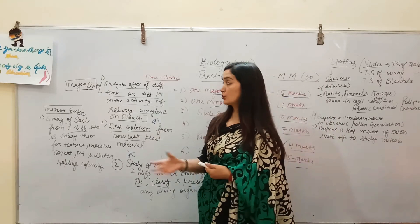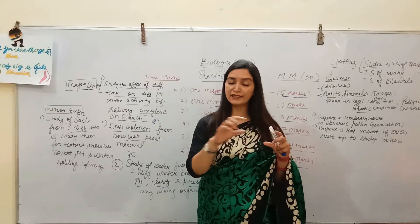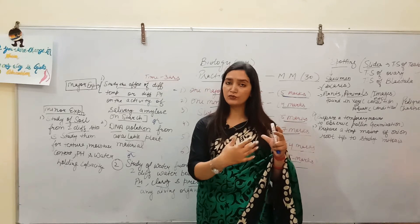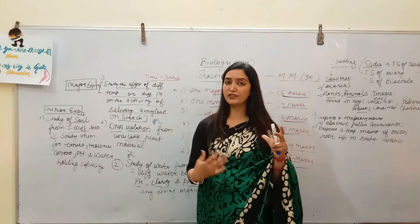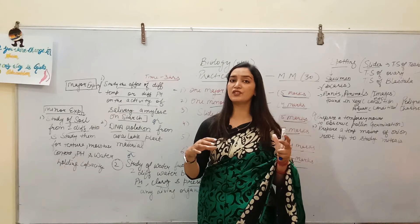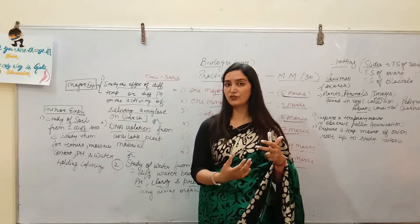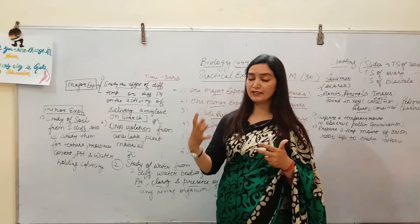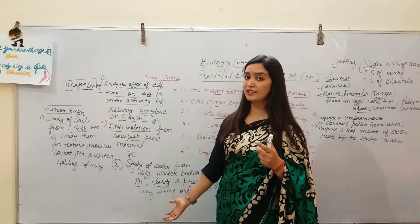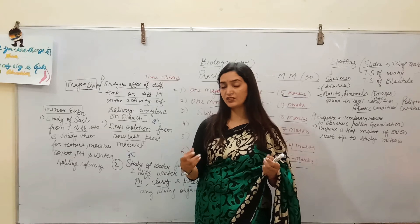You must know how to write a practical. First write the aim, then the principle or theory, then the procedure — the steps you performed during the experiment. After that write your observations, results, diagrams, and all calculations. You must prepare these because you have to perform these experiments on the practical day and write them in the sheet provided by your teacher, which will be submitted to CBSE.